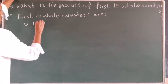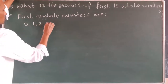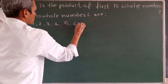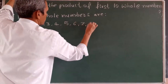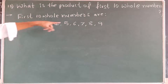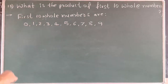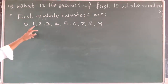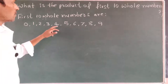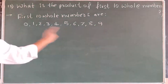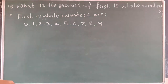So the first 10 whole numbers are: 0, 1, 2, 3, 4, 5, 6, 7, 8, 9. These are the first 10 whole numbers — there are 10 numbers in total.